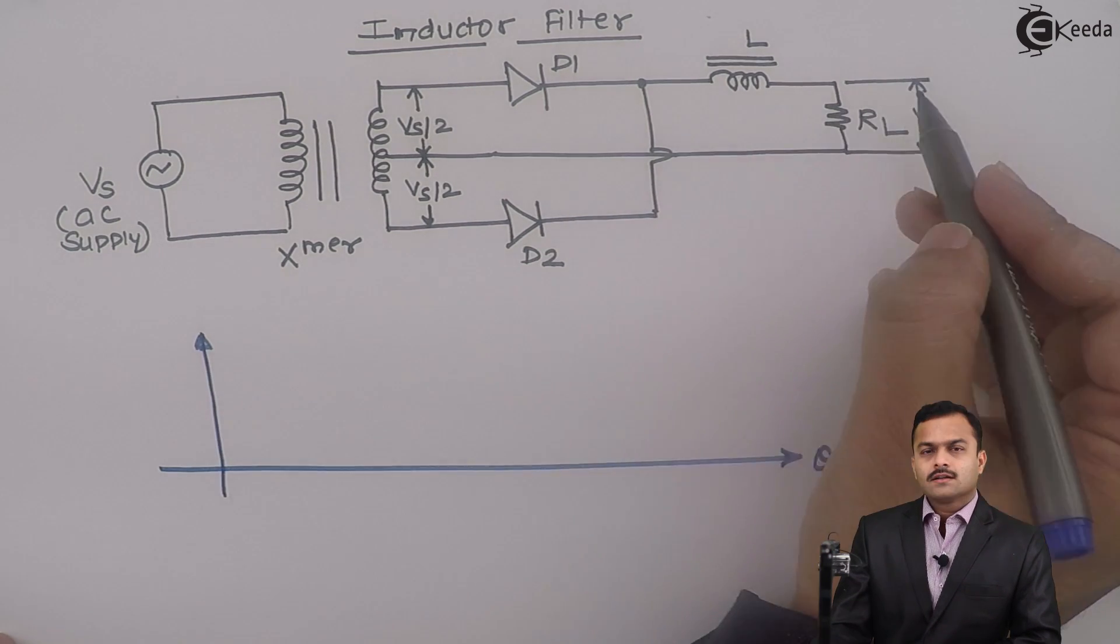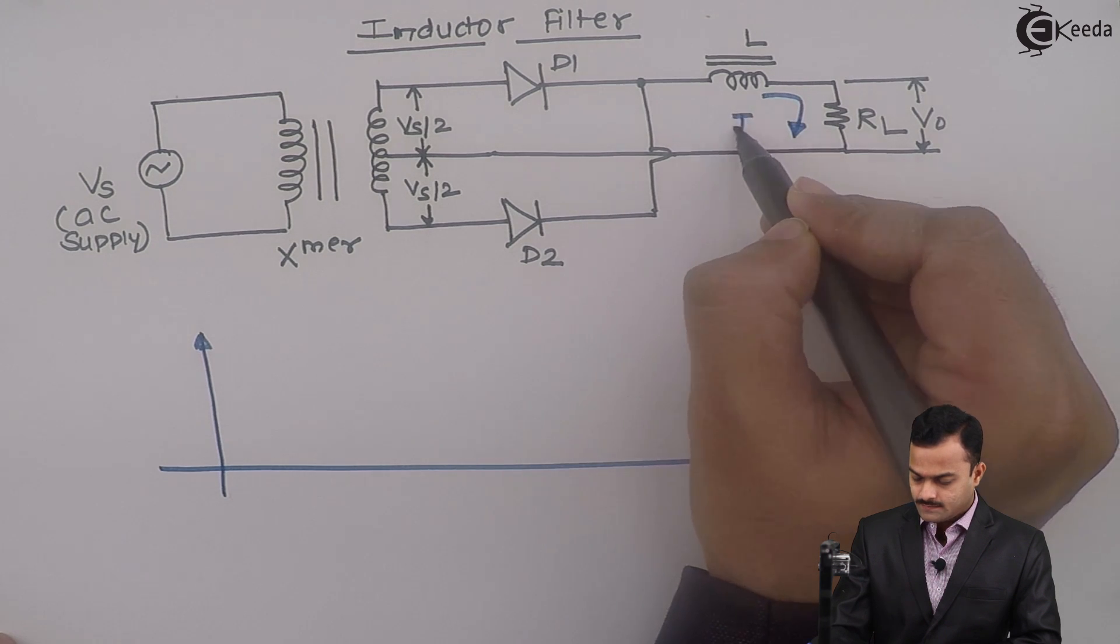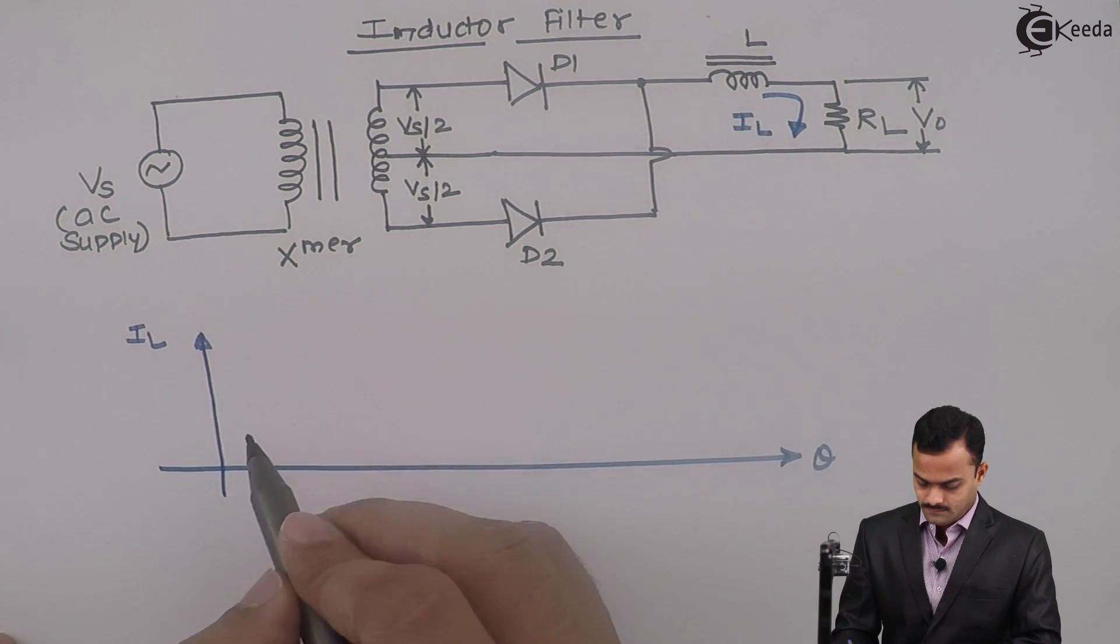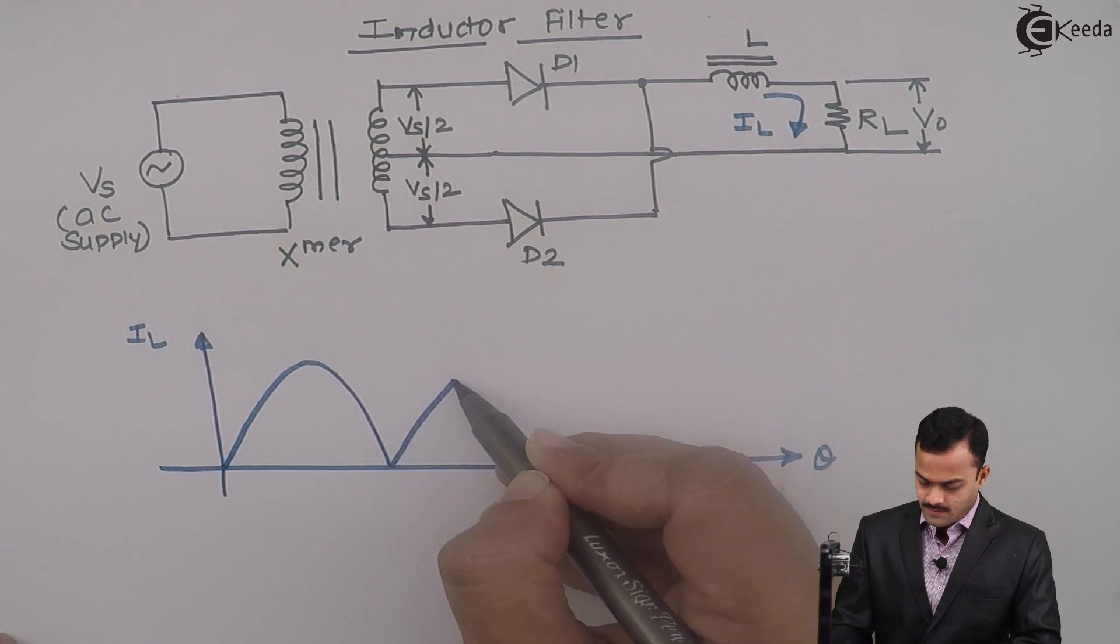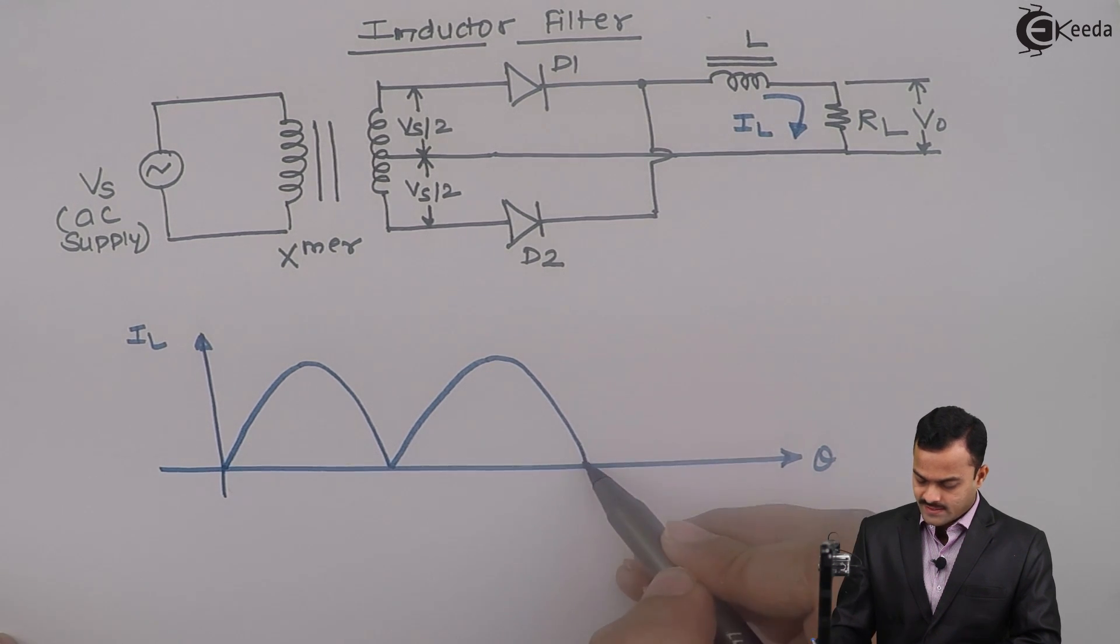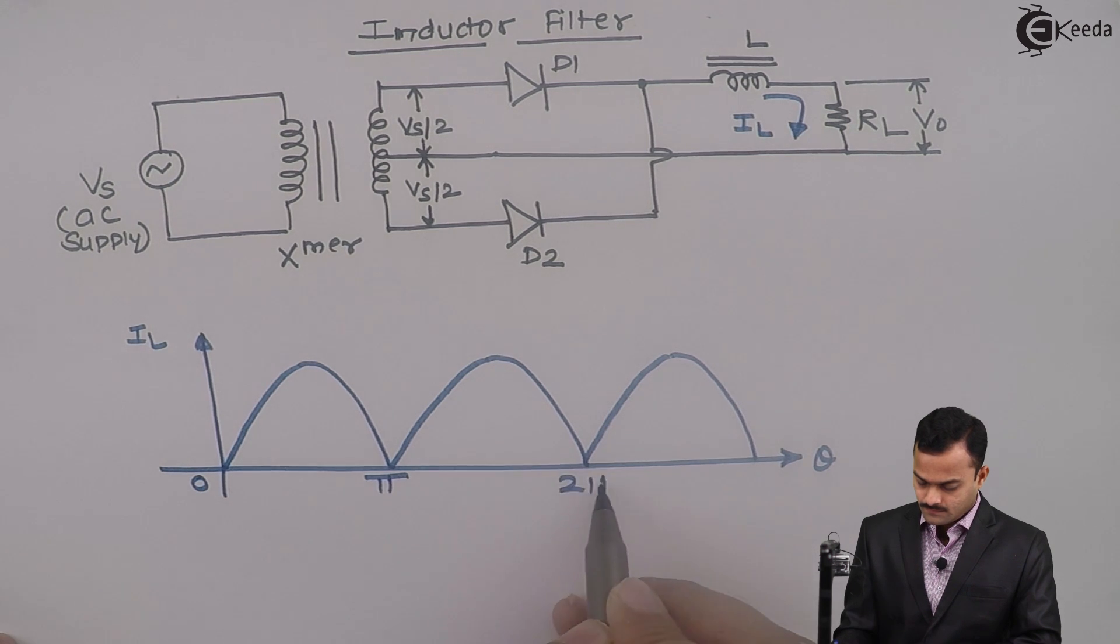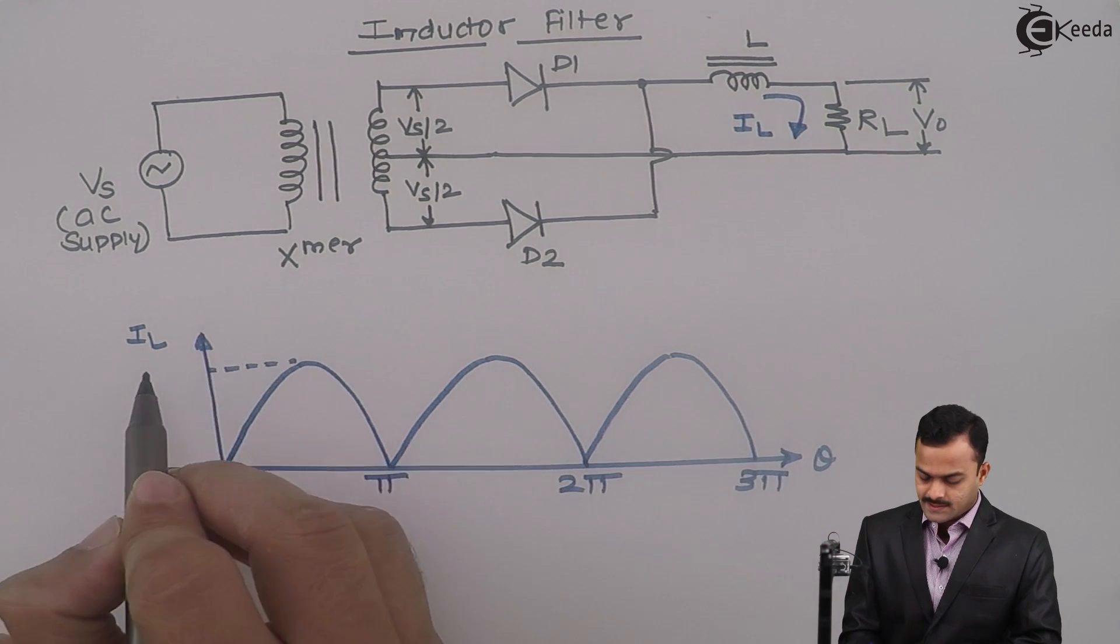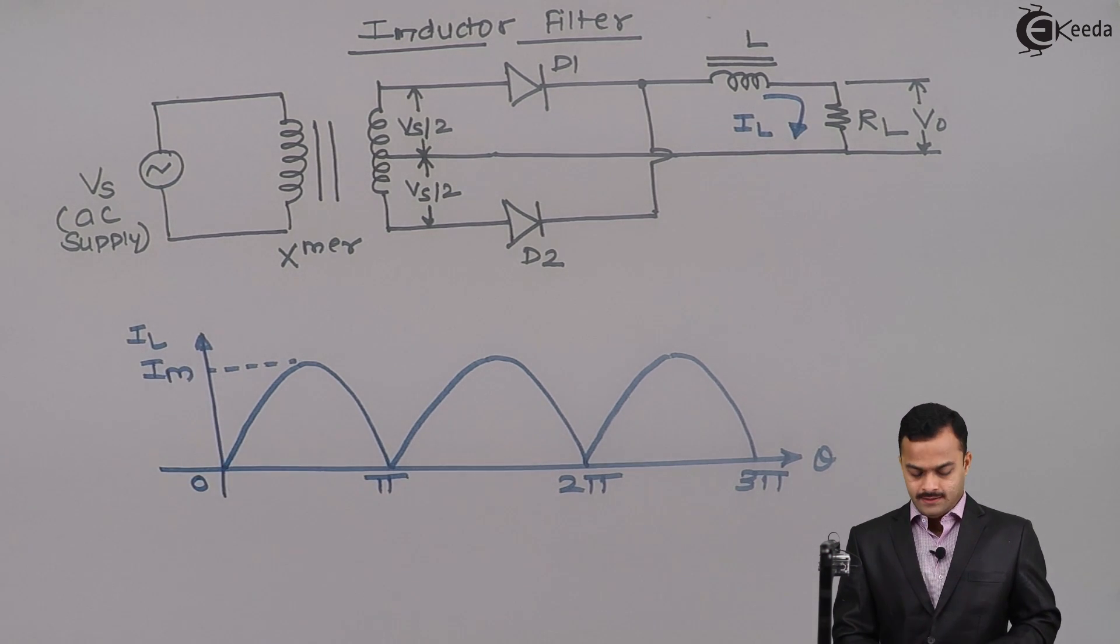So current through this will call as IL. It is a full wave rectifier, hence I am getting current pulses for both positive as well as negative half cycles.